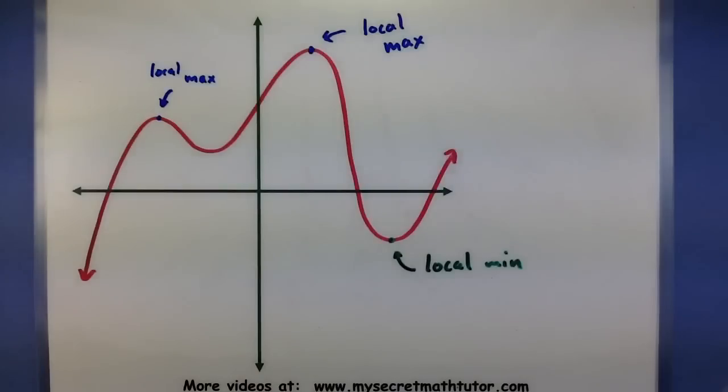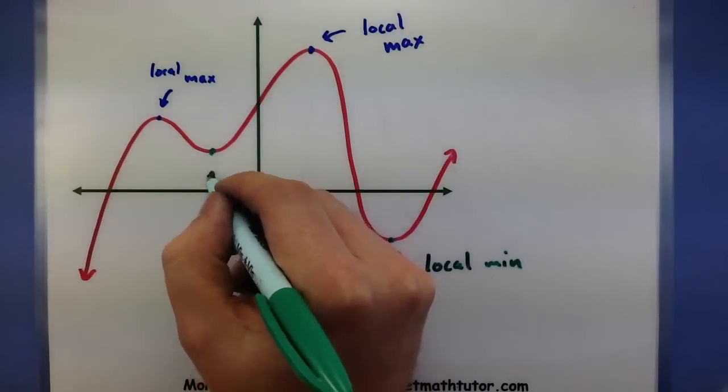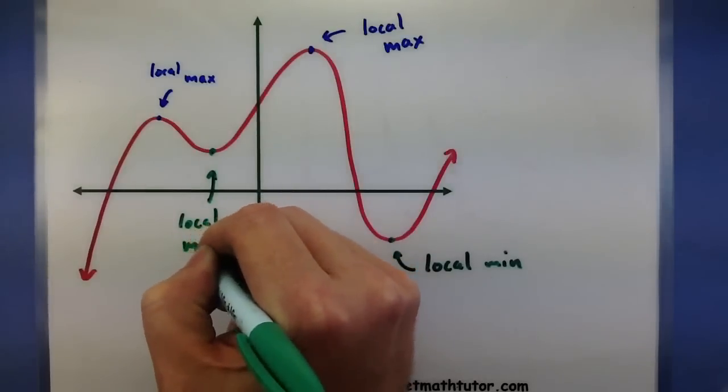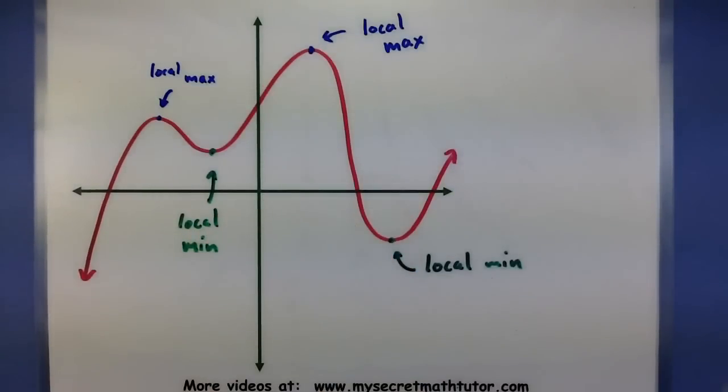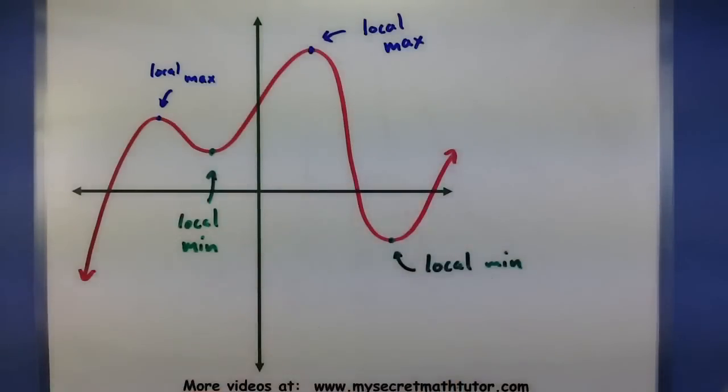And depending on the graph or function, you may have a few of these. So here's an example of a graph that has two local max, two local min, even though it really does increase forever and ever, and it keeps decreasing forever.